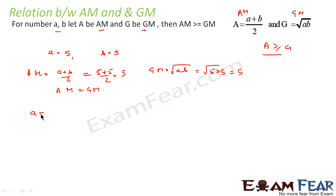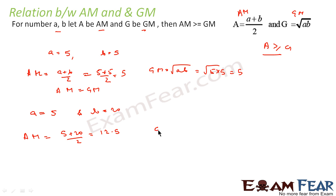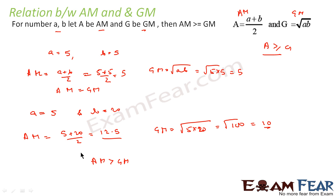Now let's take a case where a is not equal to b. Let a equal 5 and b equal 20. AM is (5 + 20)/2 = 25/2 = 12.5. GM is root of 5 into 20, that is root of 100, which is 10. So AM is 12.5 and GM is 10 — AM is greater than GM. We will never have a scenario where AM is less than GM; AM will always be greater than or equal to GM.